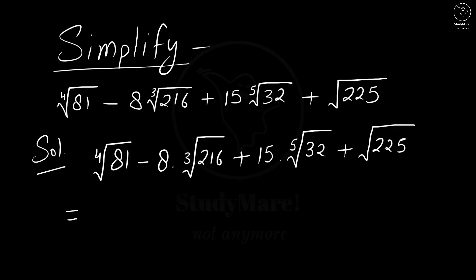We have already learned one identity that says nth root of a is equal to a to the power 1 by n. So, first thing we need to do is just use this identity to convert these radicals into fractions.